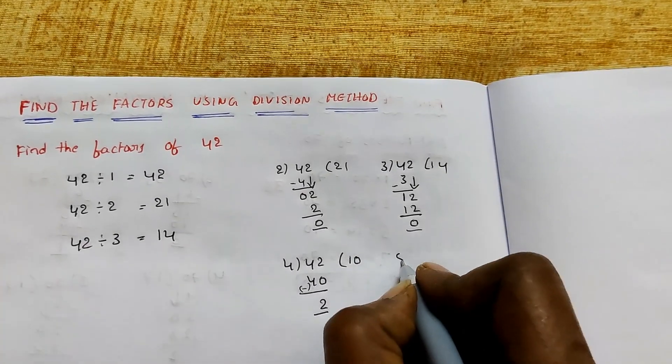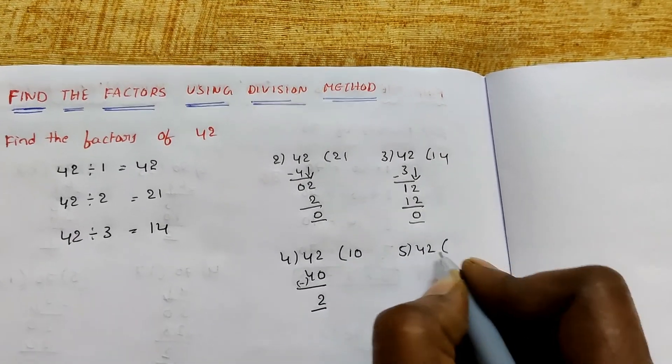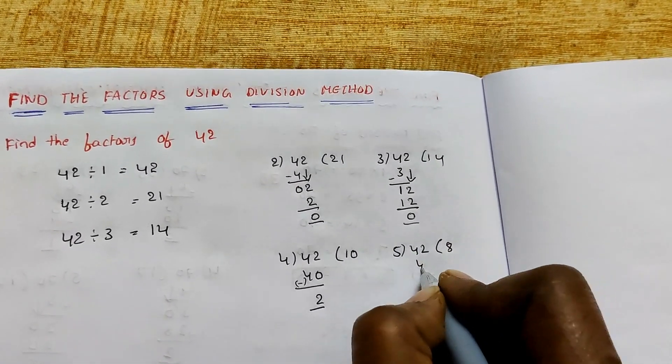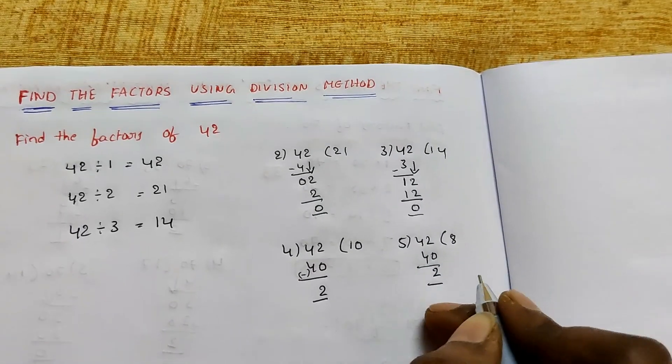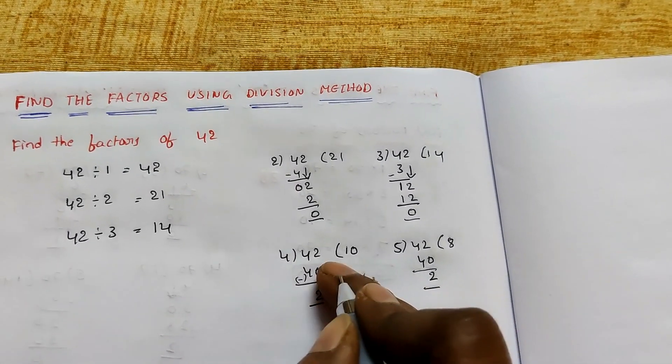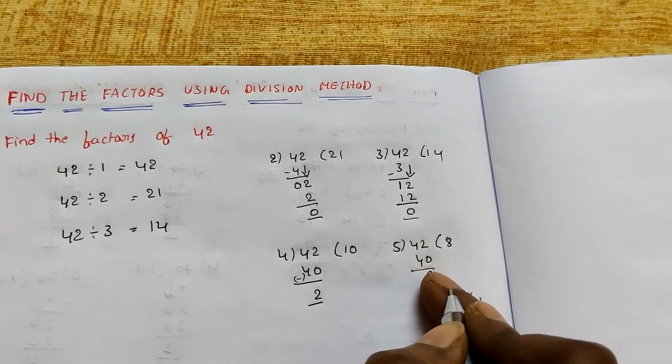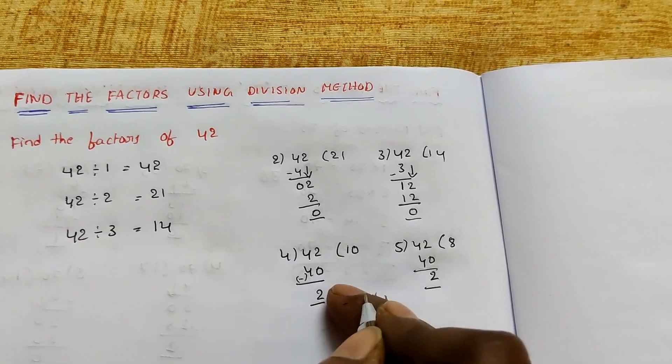Next, 5 table. Check: 42 divided by 5. 8 times 5 equals 40, remainder 2. So remainder is 2, not 0. 4 and 5 are not factors of 42.